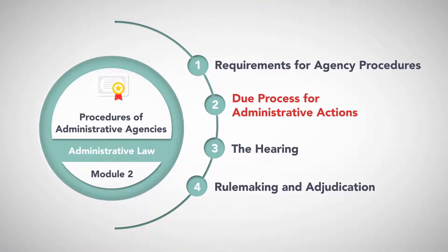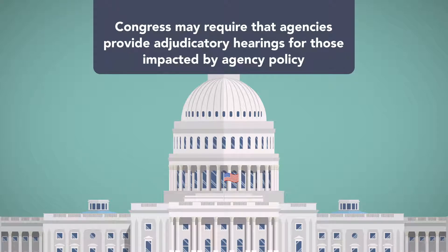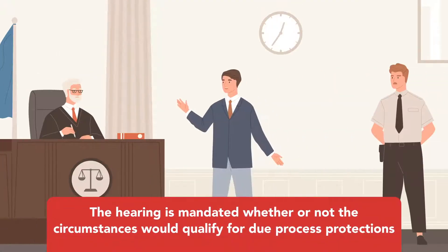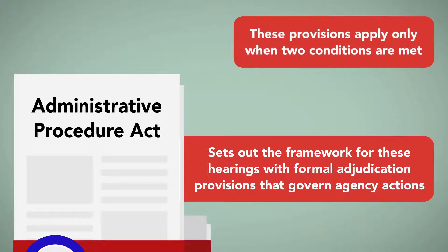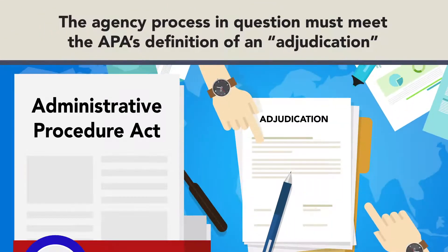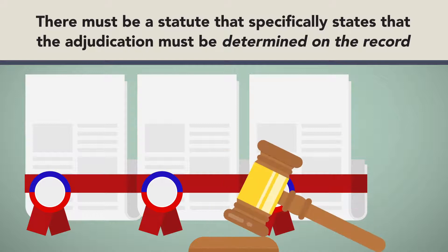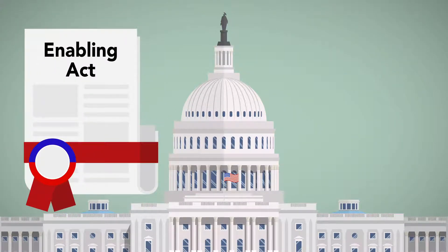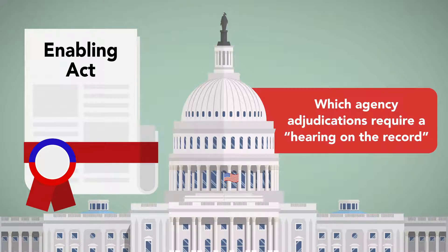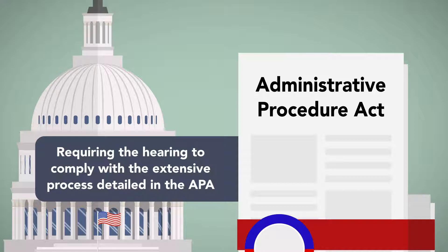Due Process for Administrative Actions. Aside from the constitutional requirement of due process, Congress may require that agencies provide adjudicatory hearings for those impacted by agency policy. In such cases, the hearing is mandated whether or not the circumstances would qualify for due process protections under the Constitution. The APA sets out the framework for these hearings with formal adjudication provisions that govern agency actions. However, these provisions apply only when two conditions are met: first, the agency process in question must meet the APA's definition of an adjudication; and second, there must be a statute that specifically states that the adjudication must be determined on the record after the opportunity for an agency hearing. This language in a statute will trigger the APA's formal adjudication provisions, requiring the hearing to comply with the extensive process detailed in the APA.